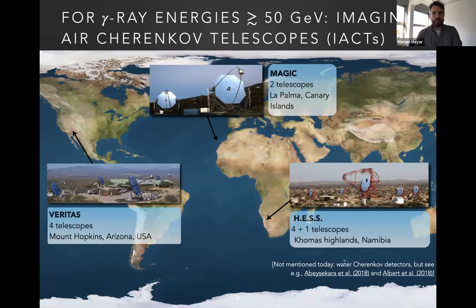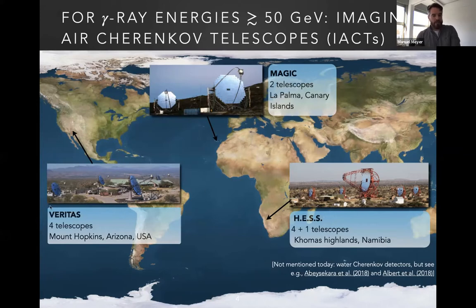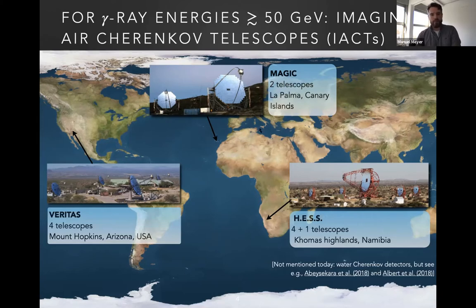You can see here a selection of currently operating Cherenkov telescope experiments. You have the MAGIC telescopes, based on the Canary Islands — there will be a dedicated talk about dark matter searches by MAGIC right after mine. You have the VERITAS telescopes on Mount Hopkins in Arizona. And then you have the HESS telescopes situated in Namibia in the Khomas Highlands. They typically instrument gamma rays above 50 GeV up to hundreds of TeV.